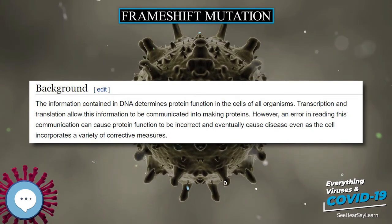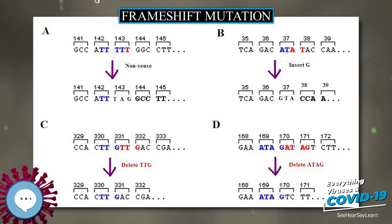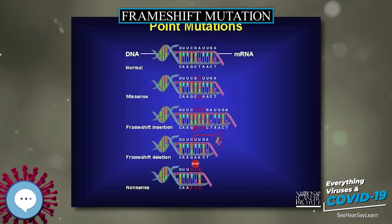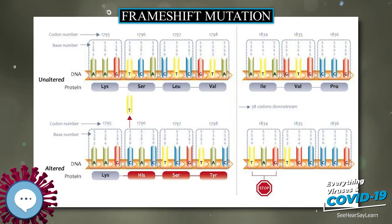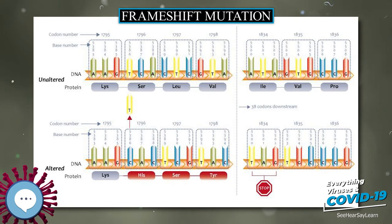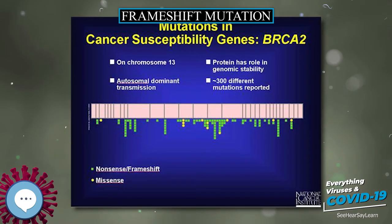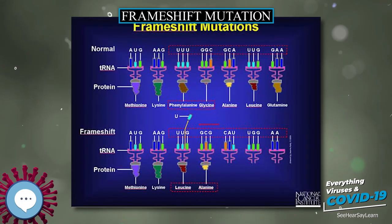For a cell to properly function, proteins are required to be produced accurately for structural and catalytic activities. An incorrectly made protein can have detrimental effects on cell viability and in most cases cause the higher organism to become unhealthy by abnormal cellular functions. To ensure that the genome successfully passes the information on, proofreading mechanisms such as exonucleases and mismatch repair systems are incorporated in DNA replication, transcription, and translation.